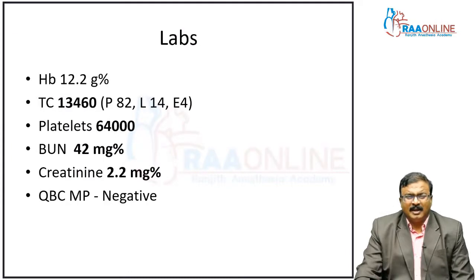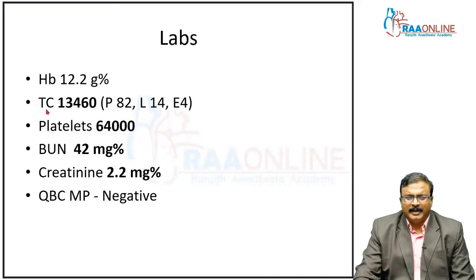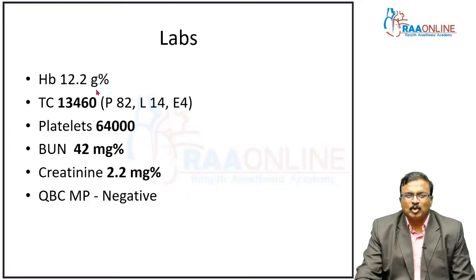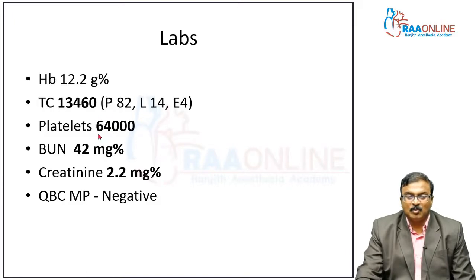These are the labs for the patient. Hemoglobin is normal. Total count is elevated — as I told you, elevated total count usually indicates a bacterial infection. If the total count is normal, it could be dengue or enteric fever. In enteric fever specifically, what you see is leukopenia and especially eosinopenia — eosinophils are specifically decreased, with neutropenia and eosinopenia. Platelets are significantly reduced: 64,000.